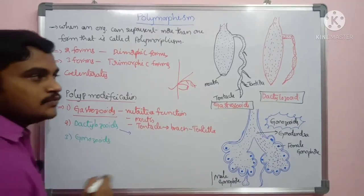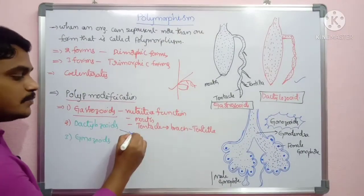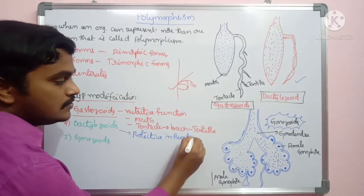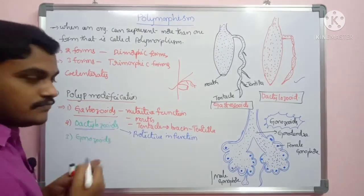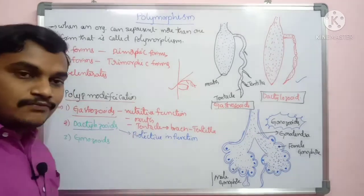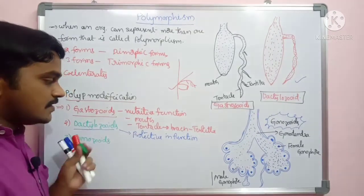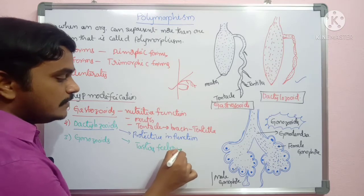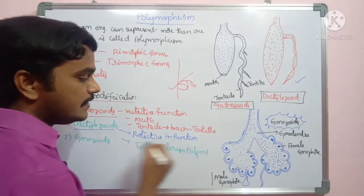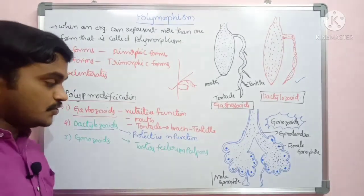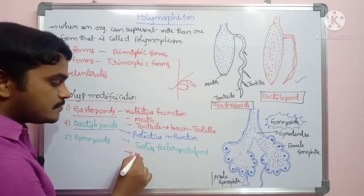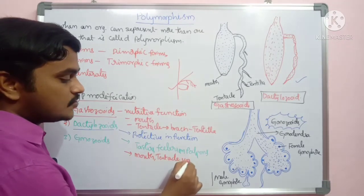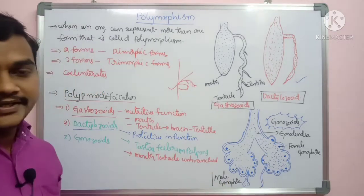Second polyp form is dactylozooids, which are protective in function — they protect the colony. These are commonly called tasters, feelers, or palpons. They do not have a mouth — mouth is absent. The tentacle is also present but is single and unbranched, with no branches.